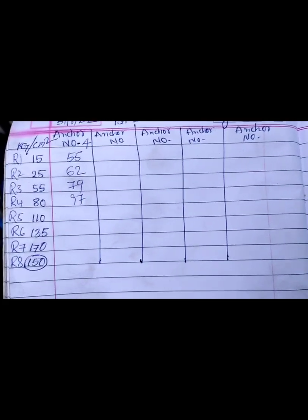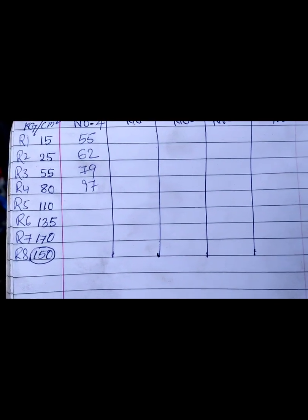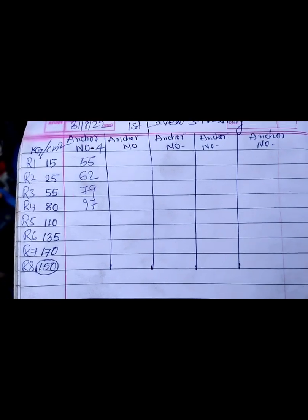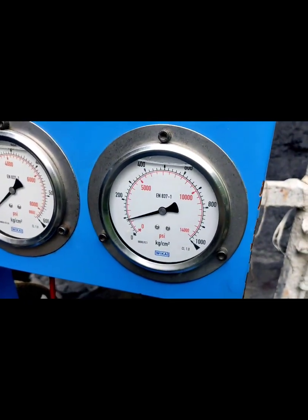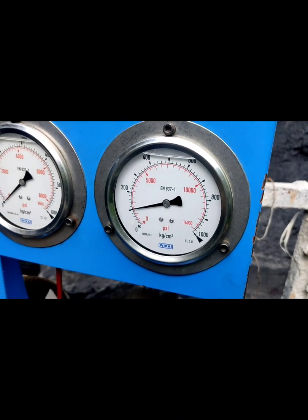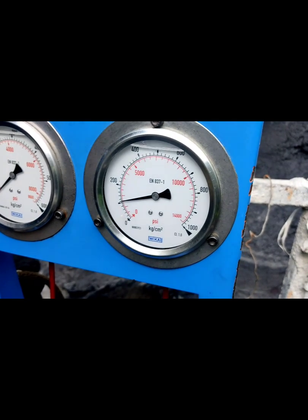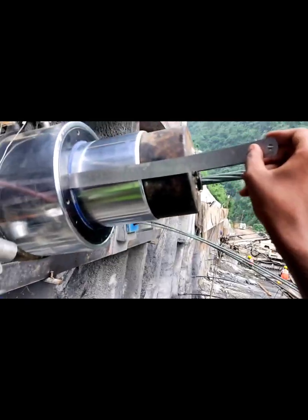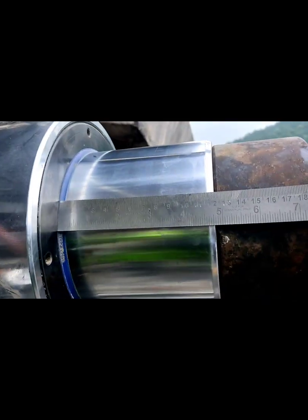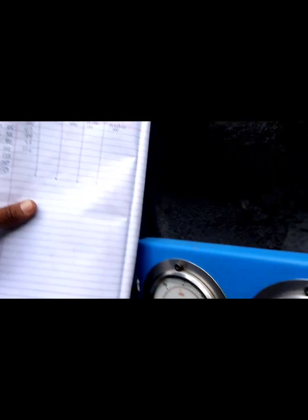We have to give load in round-wise in 8 rounds. Now in round 5, we will apply the load of 110 kg per centimeter square and we will check the displacement. Now it is 100... now it is 110. Check displacement — the displacement is 116 mm.